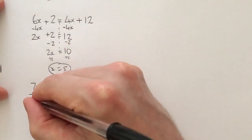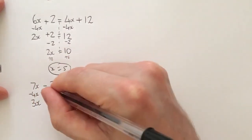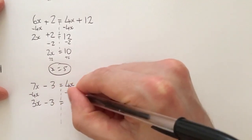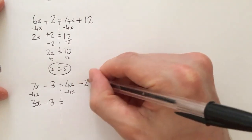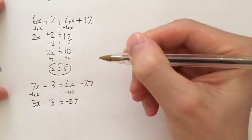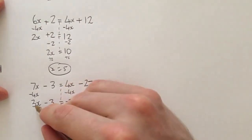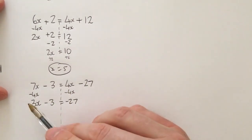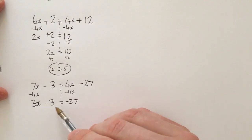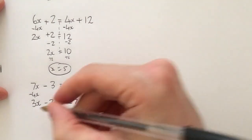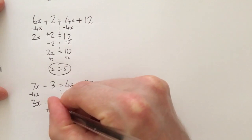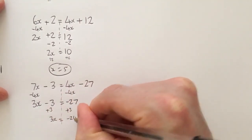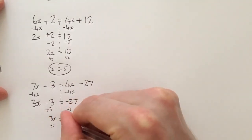7x take away 4x is 3x minus 3, unchanged. 4x take away 4x is 0, so negative 27 ends up being by itself there. To get 3x by itself, remember what we spoke about in the last video: 3x - 3 = -27. So the last thing we did there was minus 3, so I'm going to add 3 here. 3x equals negative 24, divide by 3, x would equal negative 8.